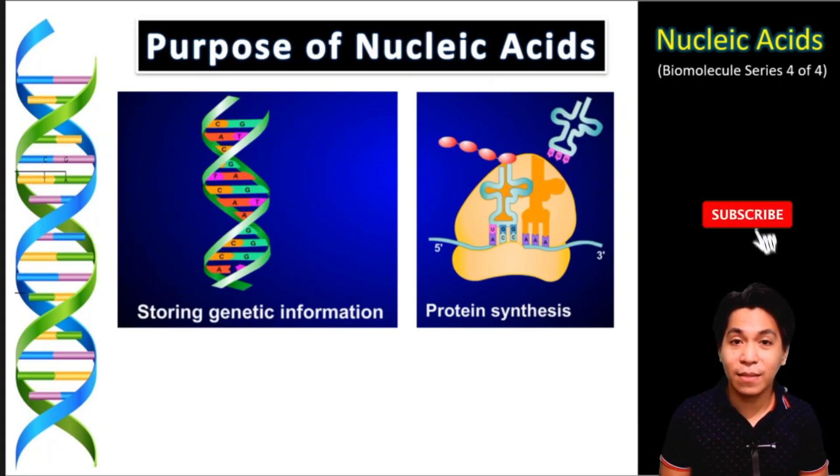Nucleic acids might be different from the previous three amino acids because nucleic acids cannot be a source of energy. Nucleic acids exist in order to do two important things which are to store genetic information to an organism and for protein synthesis. Remember that proteins can be created by linking amino acids. And how do our body identify what amino acids to be linked? It is the job of the nucleic acids.